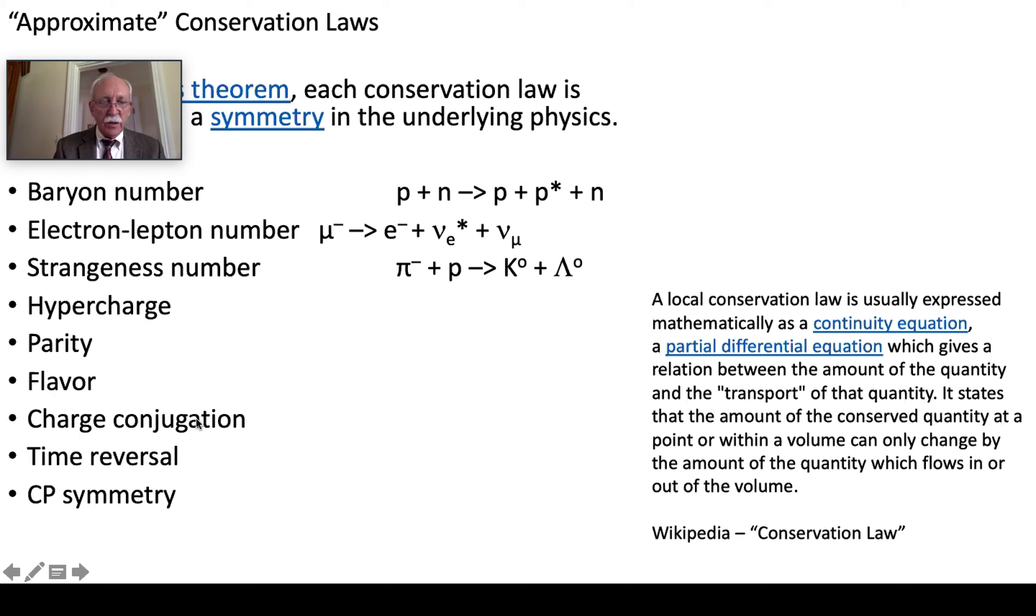Charge conjugation. That's interchanging the charges of two particles. Time reversal is just what it sounds like. CP symmetry is the parity and charge conjugation done at the same time. These all work sometime and you might think, well how are you going to know? It's just like the baryon number. If you're not having a strong interaction then the baryon number is not a conserved quantity. It's only conserved in strong interactions. So each of these has a qualifier with it.